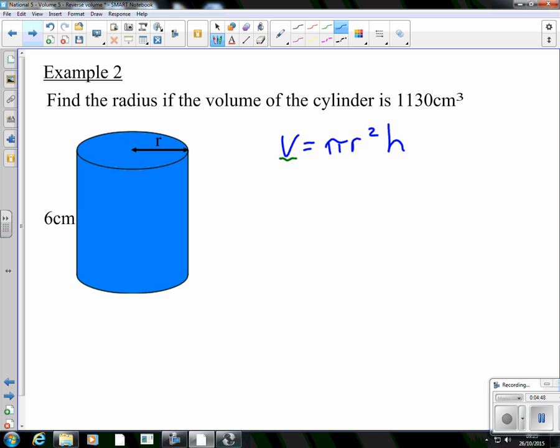The volume. Do I know the volume? Yeah, I do. It tells me. It's 1130. 1130 is equal to pi is just a number. My radius, I don't actually know my radius. It doesn't tell me. So that's just going to stay as r. And then my height is 6. So I'm multiplying that in. Now, you're halfway there. You've got your formula. You've substituted. Now, we need to rearrange. And this can be a little bit tricky here.